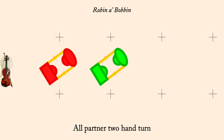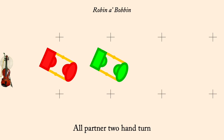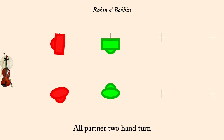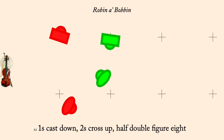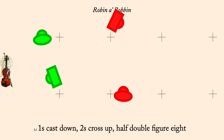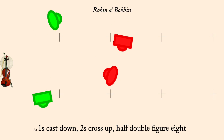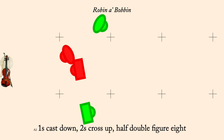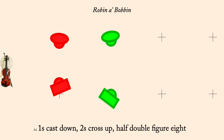Ones cast down, twos cross up, double half figure eight. Partner two-hand turn.